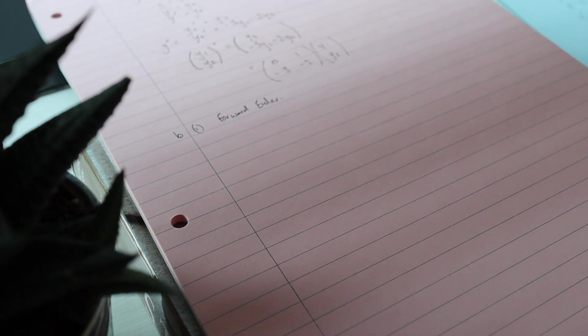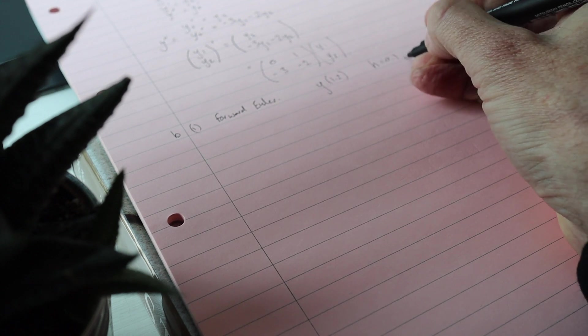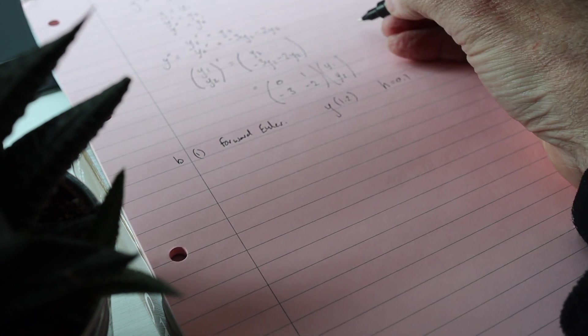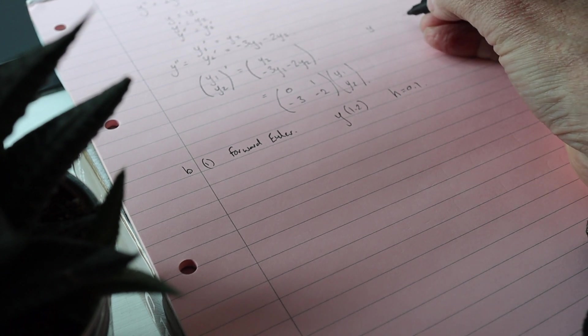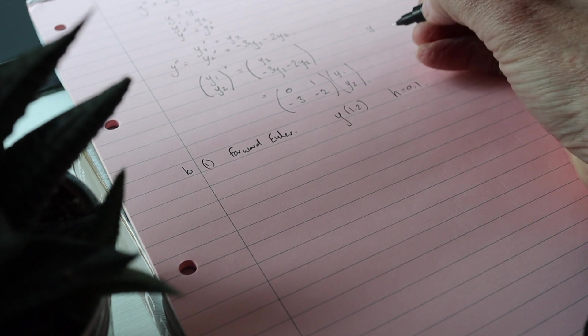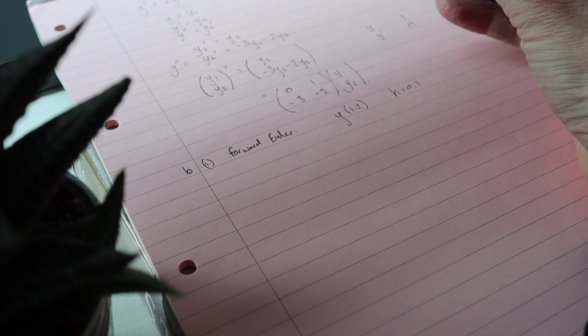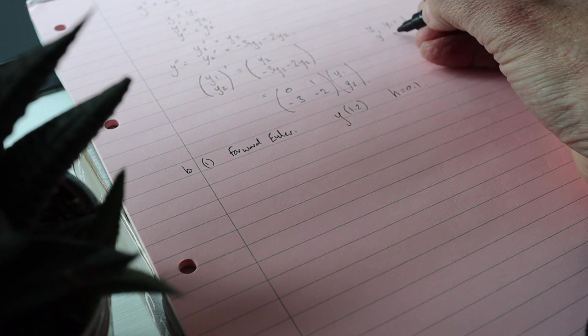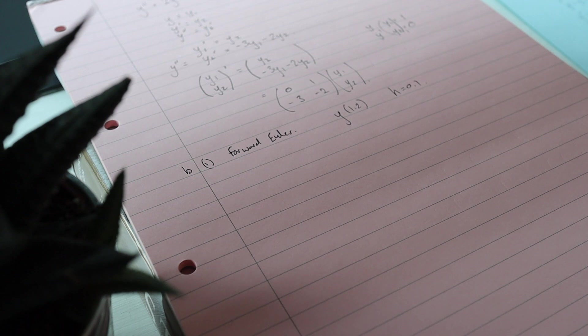Okay, part B says find an approximation to y of 1.2 using h is 0.1, so I'm gonna need to do two steps. Oh by the way, in this one I was given that y at 1 is 1 and y dashed at 1 is 0. So I really should have put y1 equals 1 and y2 equals 0 at the point 1, so I'll put that in there.